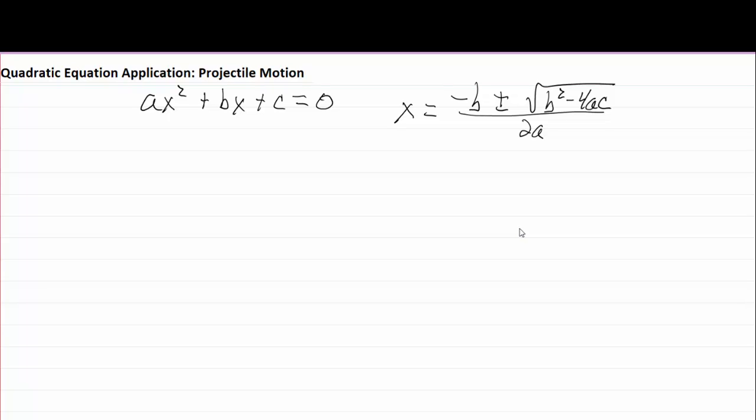Let me show you an application of the quadratic equation that might be used in physics. Quadratic equations are when you have things like this. The equation that lets you solve these things is x equals minus b plus or minus the square root of b squared minus 4ac all over 2a.